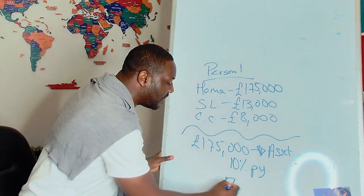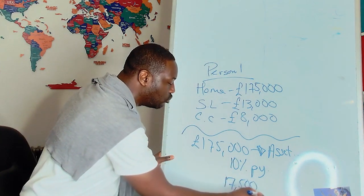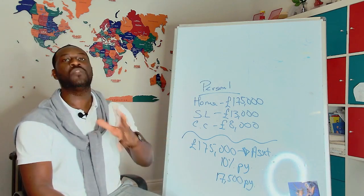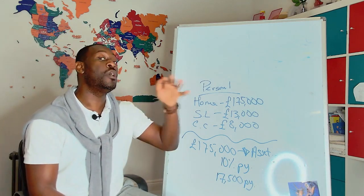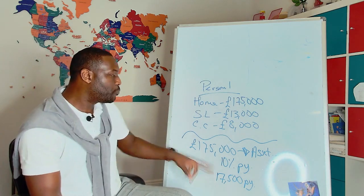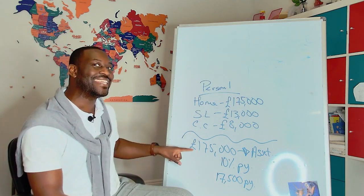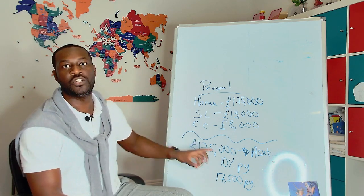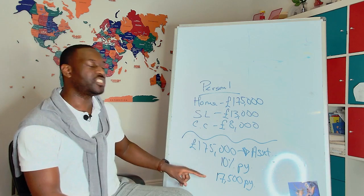Because if you had invested £175,000 in an asset or set of assets which would create for you a 10% per year return, you'd now be generating £17,500 per year, give or take £1,500 per month. Now, the interesting thing is when you look at that as an amount, you probably only need to do that twice in order for you to replace the average income in the UK.